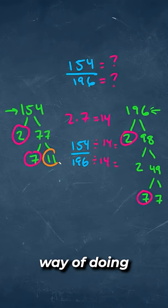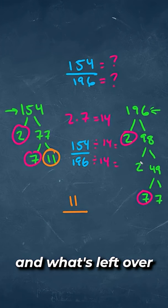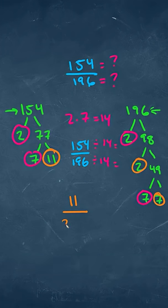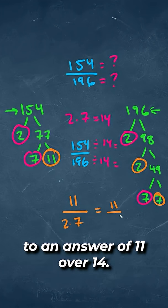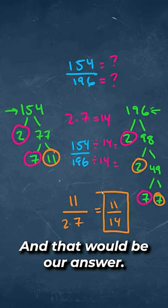Or a much simpler way of doing it is taking the 11 and putting that on top, but what's left over on the other one, which is 2 times 7, would simplify it to an answer of 11 over 14, and that would be our answer.